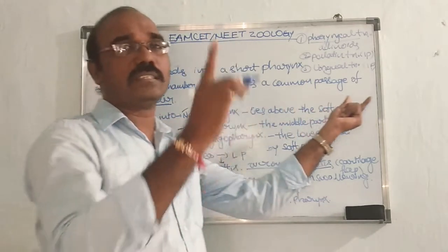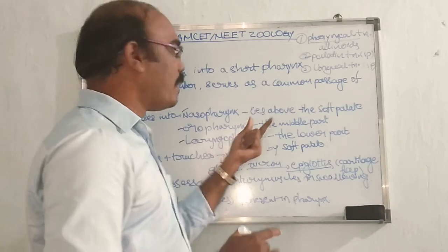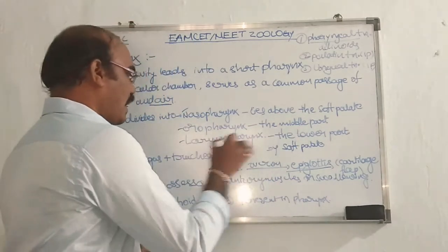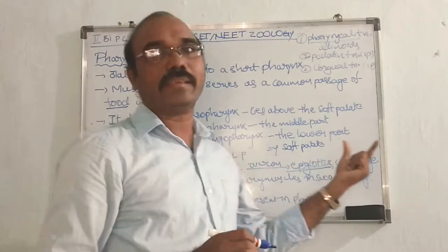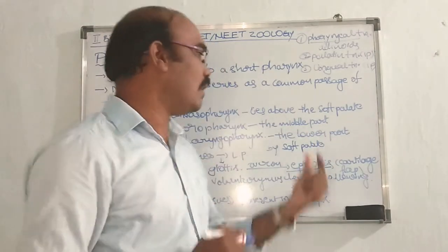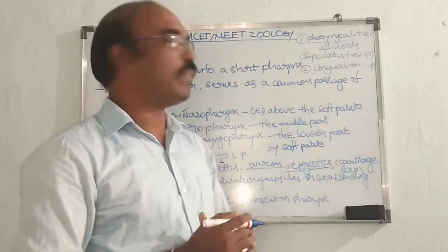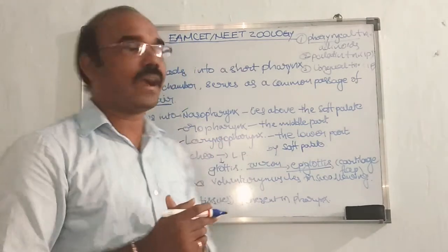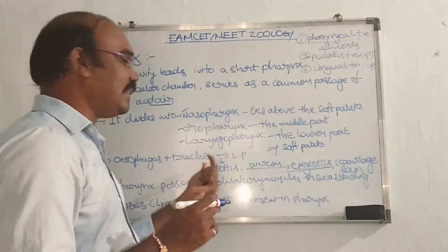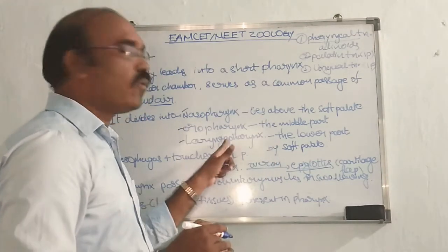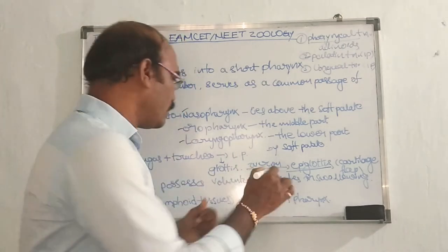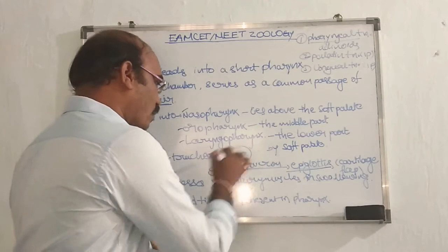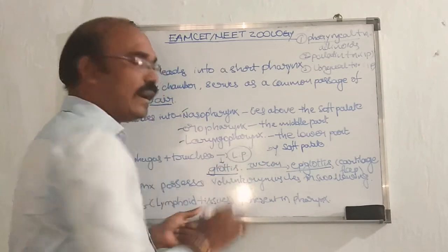Nasopharynx lies above the soft palate. Oropharynx is present in the middle part. Laryngopharynx is the lower part. The esophagus and the trachea open into laryngopharynx. The trachea opens into laryngopharynx through the glottis.